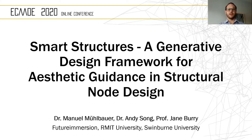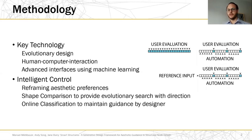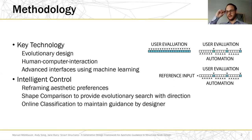Let me introduce you to the methodology first. We used evolutionary research, human-computer interaction, and machine learning to build an intelligent control system that responds to the static preferences of the designer. This system works with an initial image input that is then compared to solutions using shape comparison for direction of the search process. The other mechanism we used is online classification, which provides the designer with support during the automated phases of design.